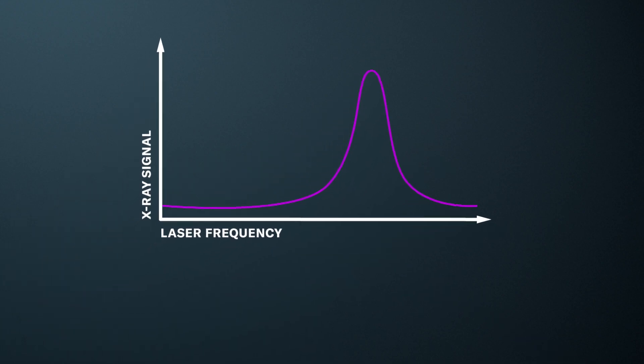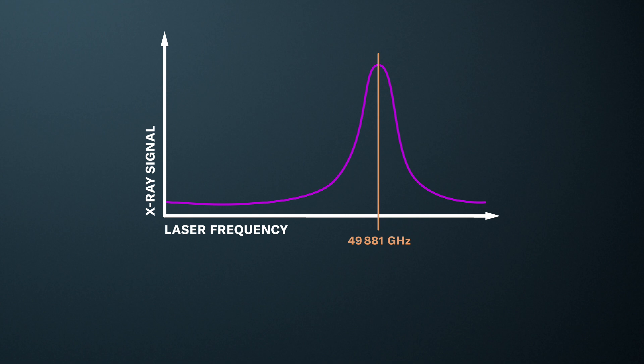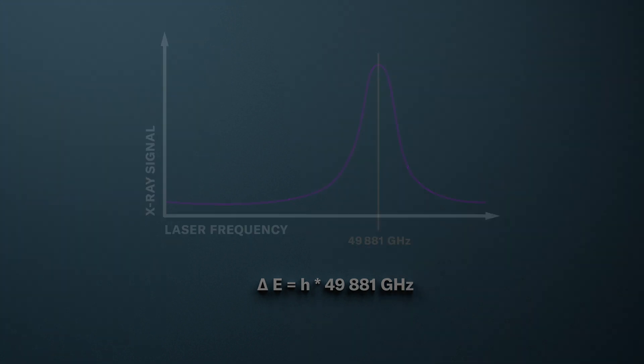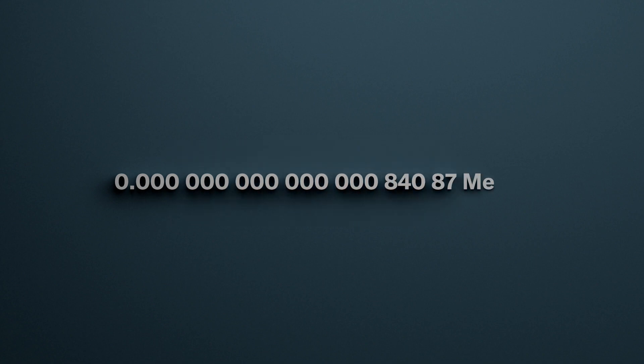From the resonant frequency, shown here in GHz, we can now determine the difference between the two energy levels of the muon. Finally, from this we can calculate the radius of the proton: 0.84087 femtometers — so inconceivably small and yet so exact.